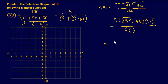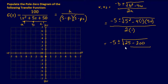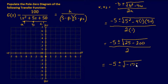Continuing the calculation: negative 5 plus or minus the square root of negative 175, over 2. Since we have a negative value under the square root — and as noted earlier, when the discriminant is less than zero — this will produce an imaginary number.